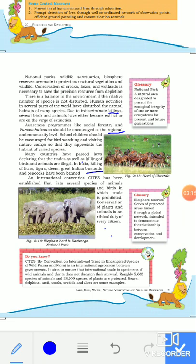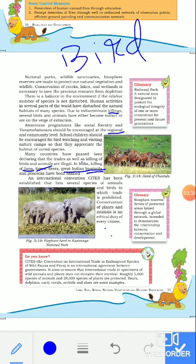In India, the killing of lions, tigers, deer, Great Indian Bustards, and peacocks has been banned. We cannot kill any animal, whether it is a tiger or a lion. The Great Indian Bustard is a bird that is now rarely seen in Indian forests. People used to kill peacocks just to obtain their feathers or body parts, and this should not be done.